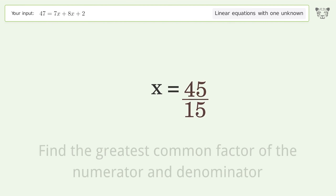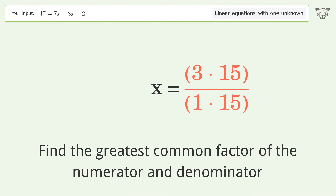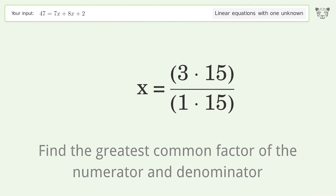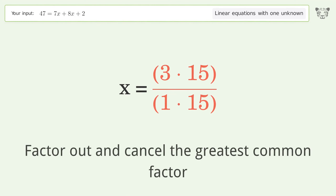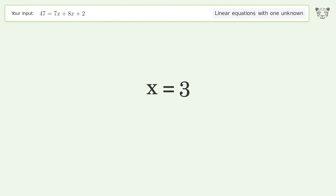Find the greatest common factor of the numerator and denominator. Factor out and cancel the greatest common factor. And so the final result is x equals 3.